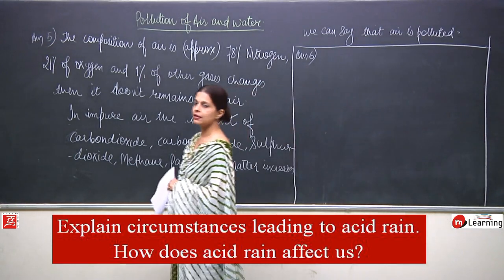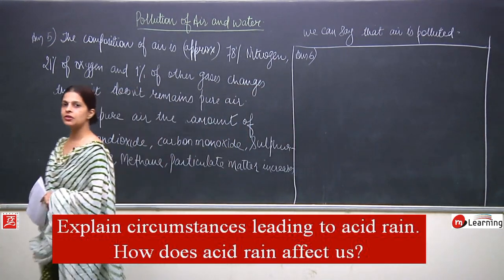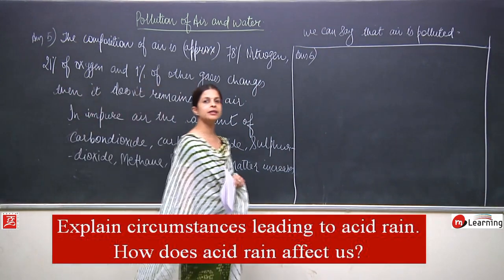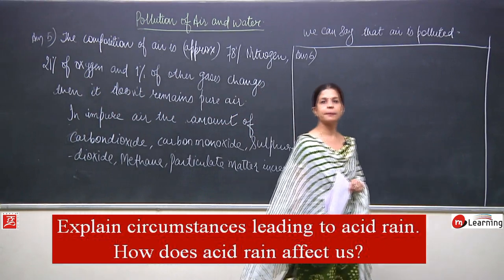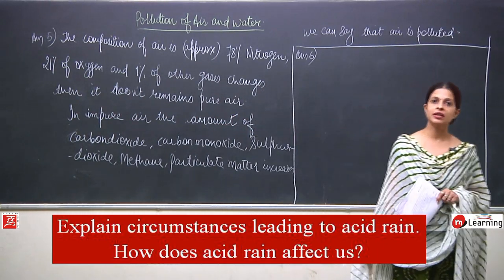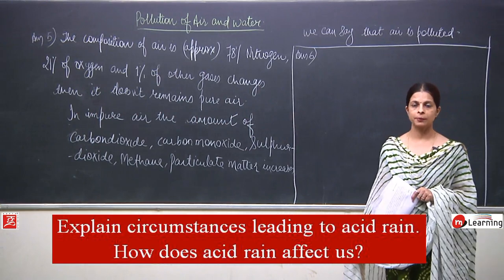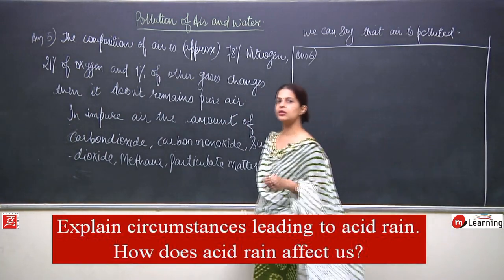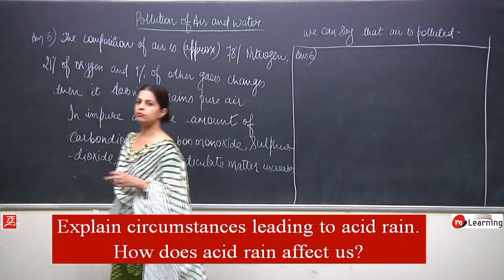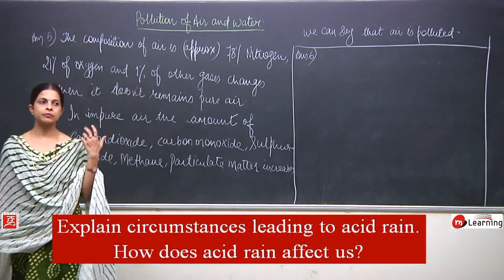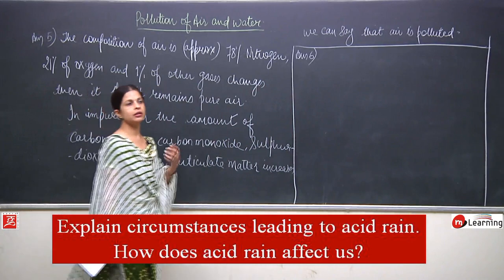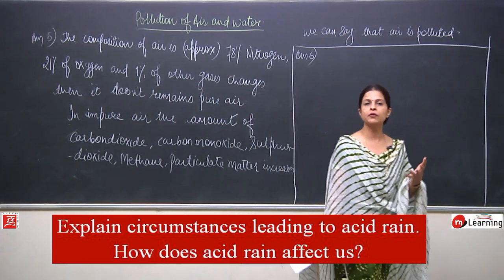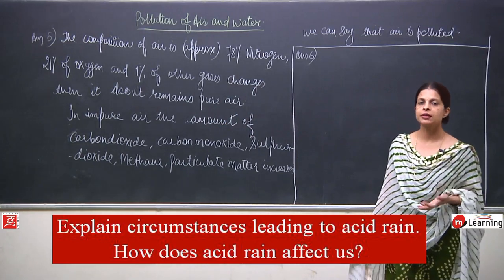Acid is corrosive in nature, and definitely acid rain is also corrosive. It not only affects living things but also non-living things. For non-living things, it corrodes the soil and statues. It is very harmful for aquatic animals as well.